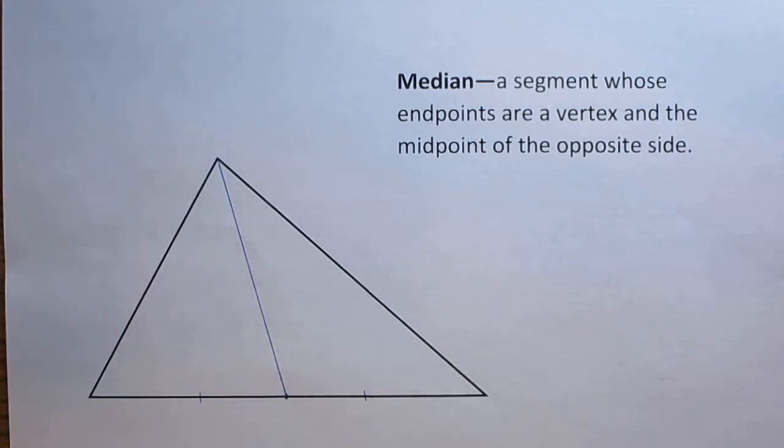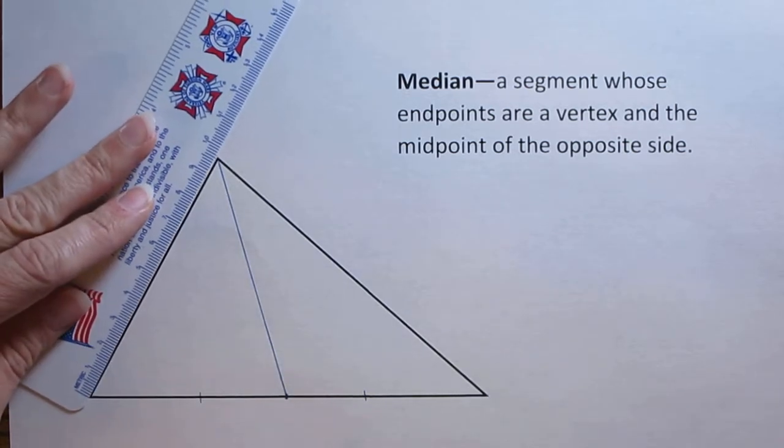I'm going to go through and find the other two medians, connecting this vertex with the midpoint of the opposite side and this vertex with the midpoint of its opposite side. Go through one at a time and measure the length of each side.